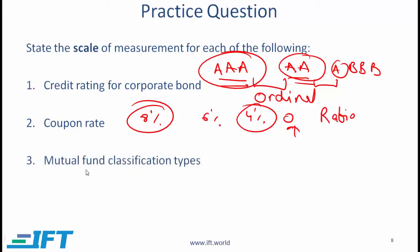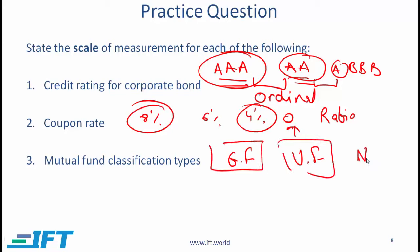Mutual fund classification types: if you have a fund classified as a growth fund versus another classified as a value fund, this is a nominal scale where only the name makes sense. We can't say that a value fund is better than a growth fund; the classification is just identifying two different kinds of funds. The easy way to remember this is N for nominal and N for name.